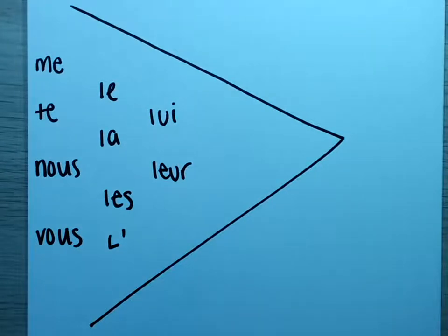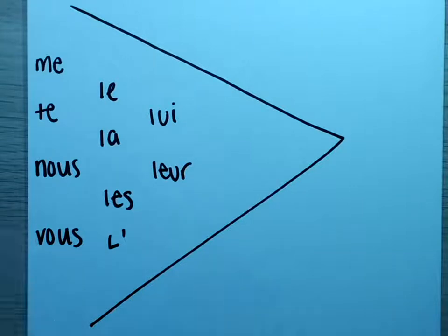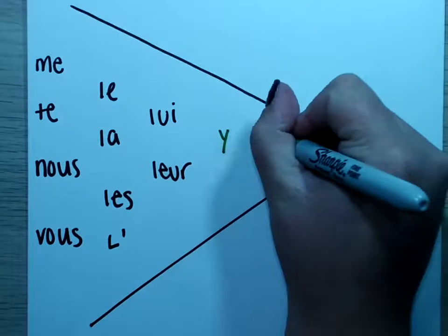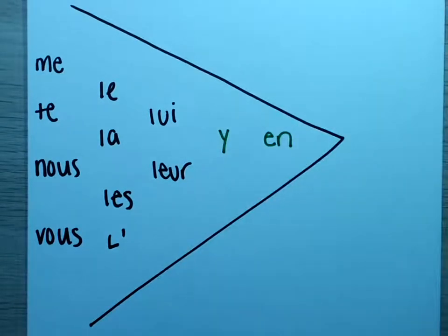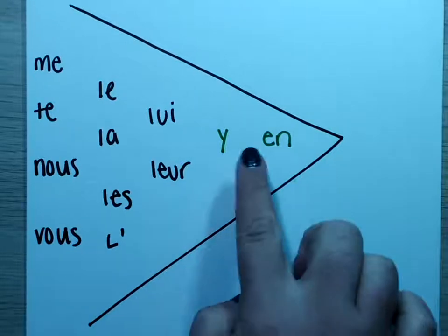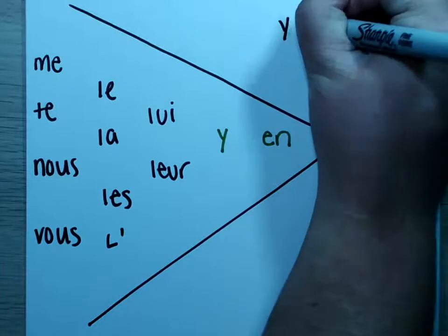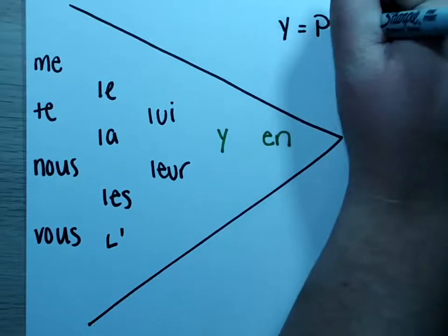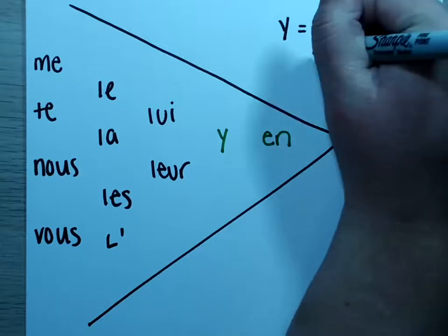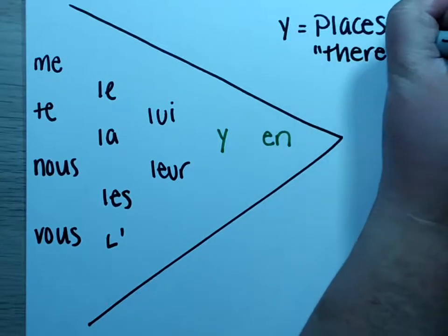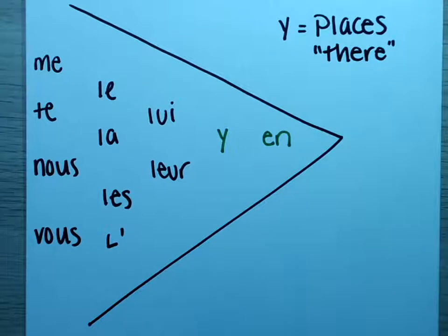Now this is where we add in our new pronouns. Our new pronouns are y and en — that's going to finish off our direct and indirect object pronouns. Let's talk about these two over on the side. First, let's talk about y. Y is used when you are talking about places, and y in French just means 'there.' You would use it to say 'I had gone there' or 'he had gone there.'